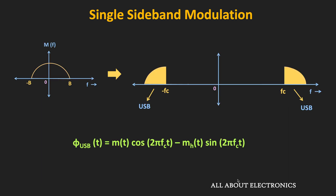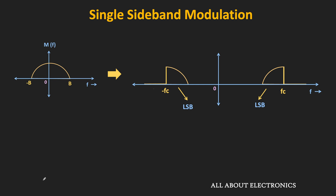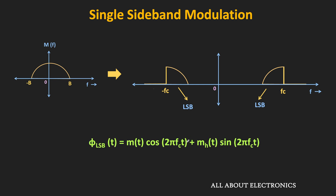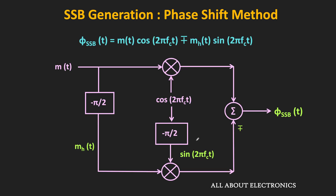For the upper sideband, the expression is equal to m(t)·cos(2πfct) minus mh(t)·sin(2πfct), where mh(t) is the Hilbert transform of the message signal m(t). Similarly, for the lower sideband, the equation remains the same but with a positive sign. With the help of this mathematical expression, it is possible to generate this SSB signal.